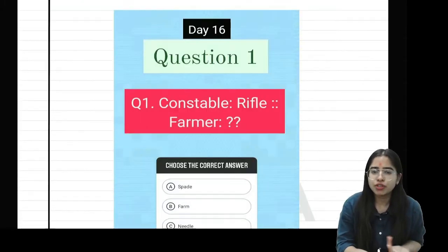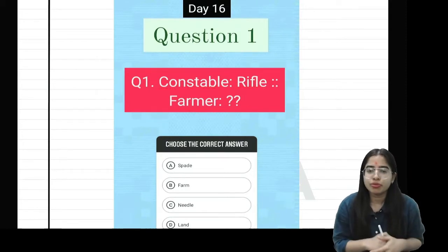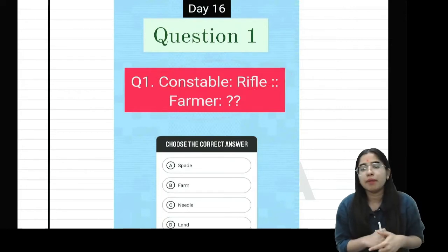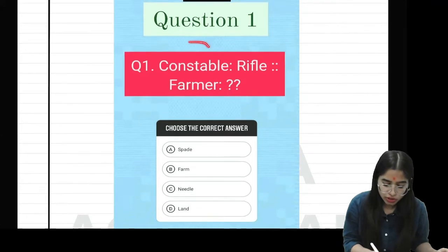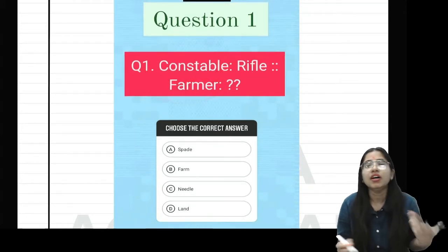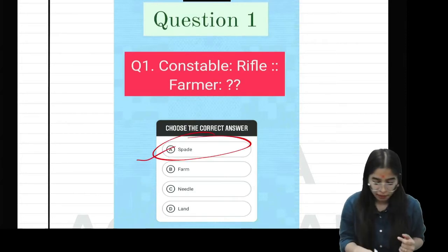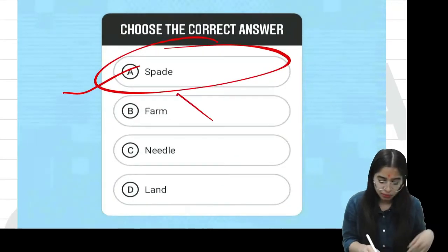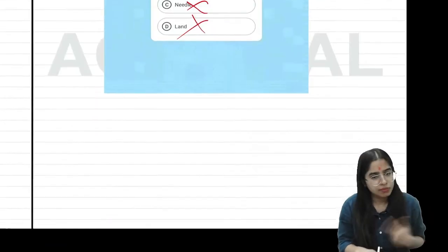The first question is on your screen: Constable is to Rifle as Farmer is to what? In both pairs, there's the same relation you need to apply. The correct answer is: a constable uses a rifle in their duty; similarly, a farmer uses a spade in their work. Farm, needle, or land don't have this same relationship, so the correct answer is spade.